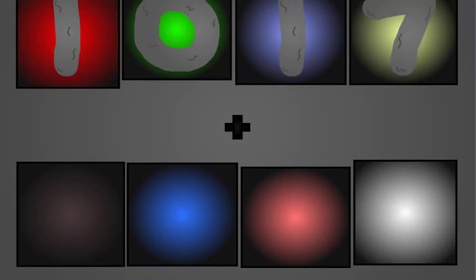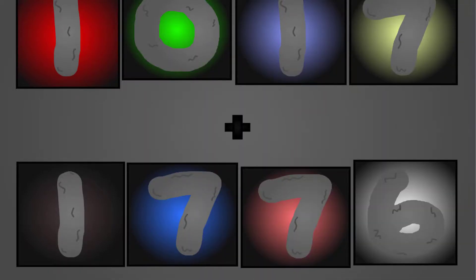1, 0, 1, 7, plus 1, 7, 7, 6. These big number blocks are going to show it off by adding.